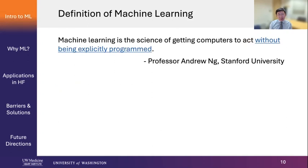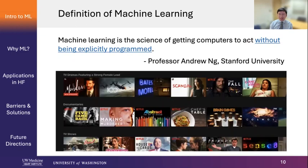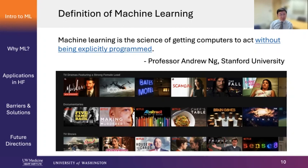What does 'without being explicitly programmed' mean? That really gets to the heart of machine learning. You are probably all familiar with Netflix movie recommendations. Without machine learning, computer programmers used to have to input rules — for example, if you like movie A, then recommend movie B and C. That's not possible for Netflix dealing with millions or even billions of users, and it's also not possible for most of medicine, because medicine is too complicated to be programmed with simple rules.